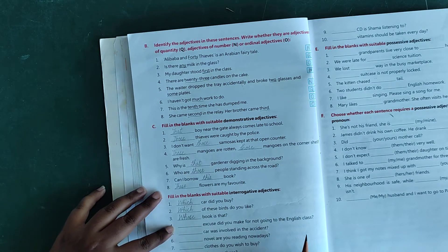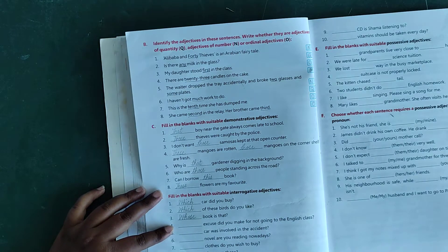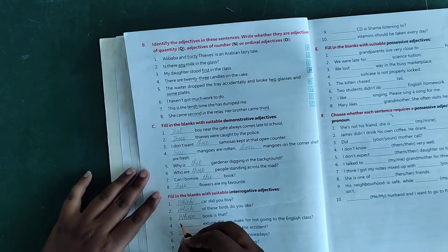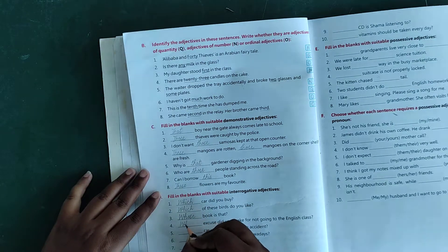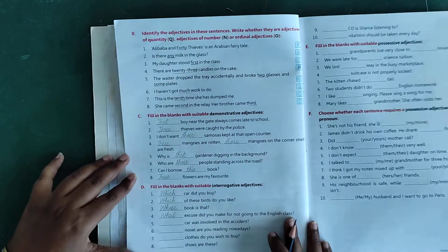Number 4: dash excuse did you make for not going to the English class? What excuse did you make, W-H-A-T, what excuse.